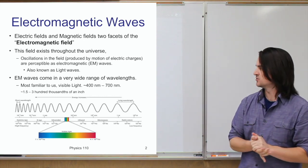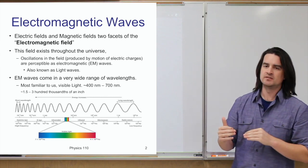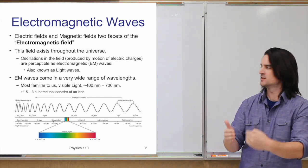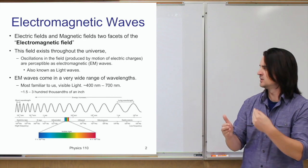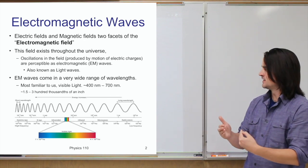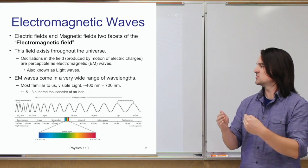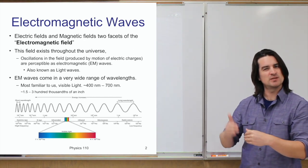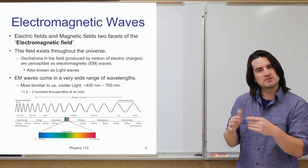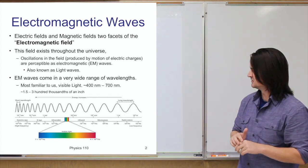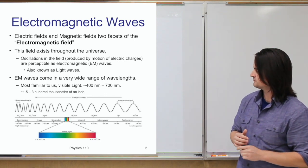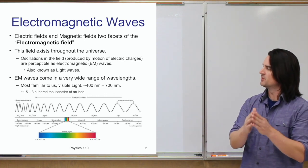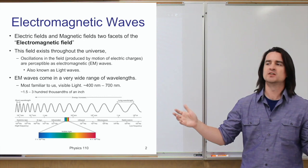Waves have fundamental properties like wavelength, frequency, and wave speed. Visible light is an electromagnetic wave within a certain wavelength range — about 400 nanometers to about 700 nanometers. In terms of inches, that's somewhere around a couple hundred thousandths of an inch — incredibly small. The electromagnetic spectrum covers the full breadth of possible wavelengths that light can come in.